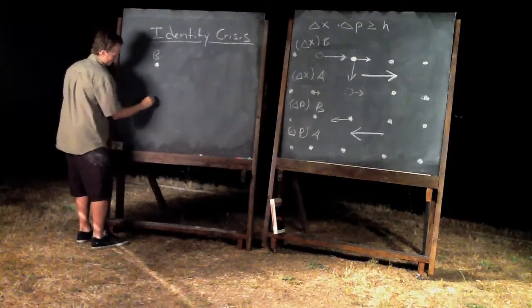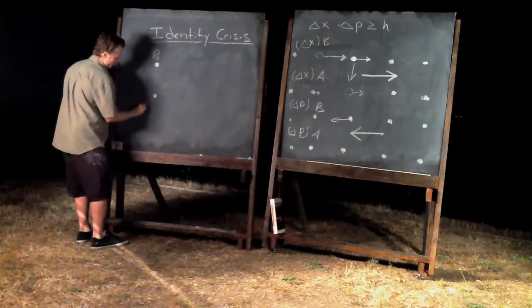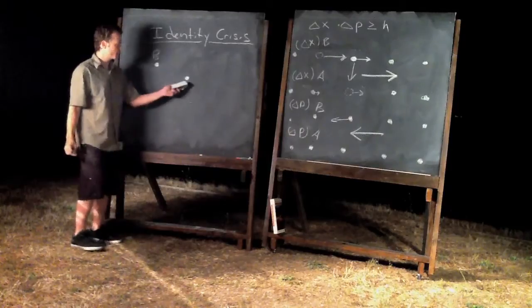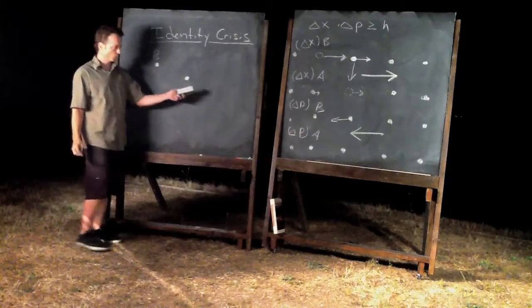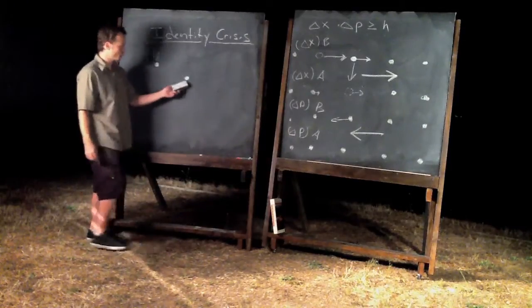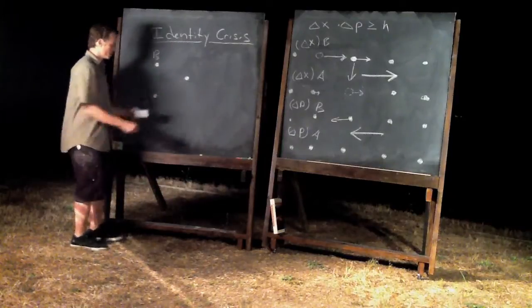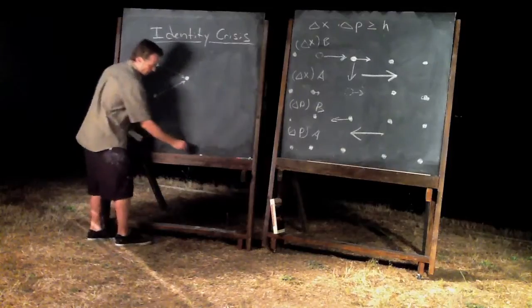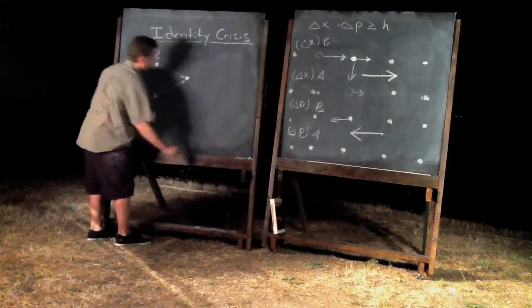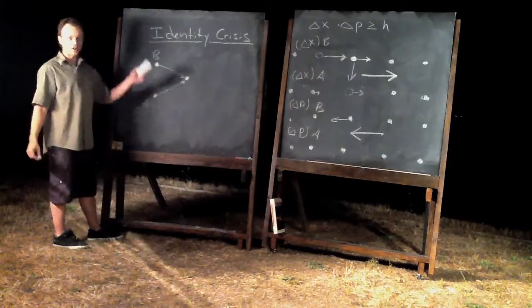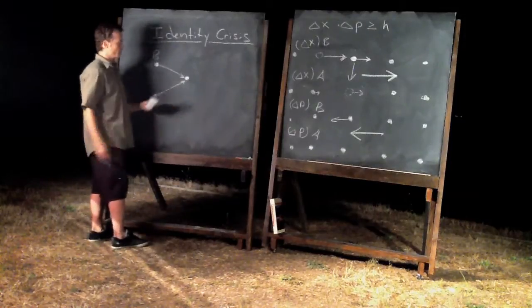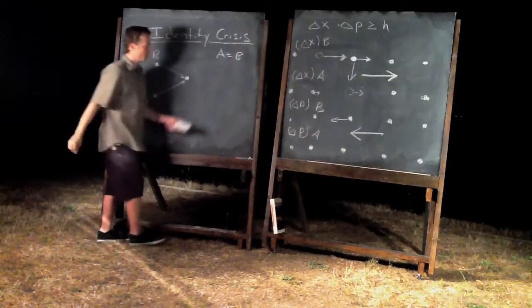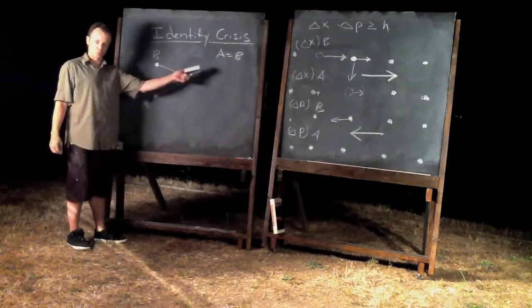This is B and this is A. They both have a probability to be at the same place at the same time, which is what we showed over here. This would be the point of identity crisis. At the point of which they are in identity crisis, A and B are the same particle. At the point of identity crisis, A equals B, as in there's no longer two particles. There's one.